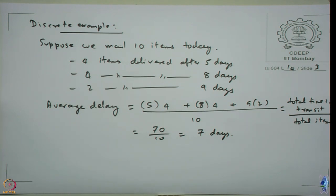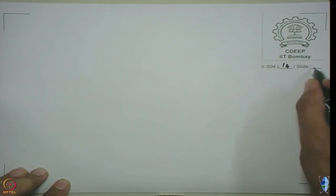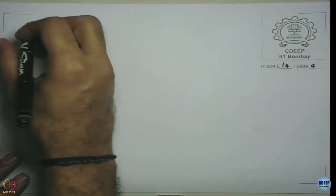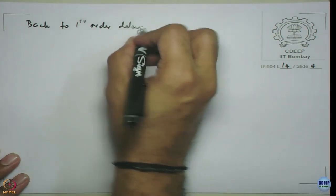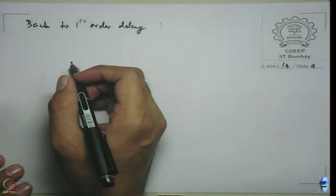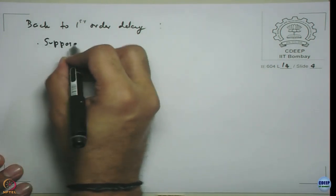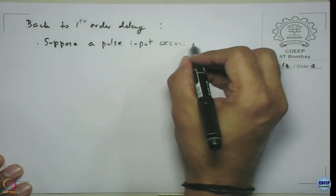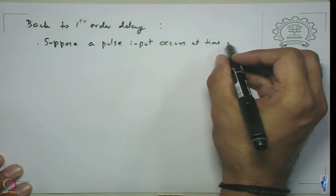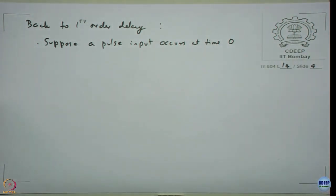Now let us see how we can do it for the continuous case that we have right now, where at every time instant we are having some unit that is getting out of the stock. Let us go back to first order delay. Let us suppose a pulse input occurs at time zero and there is no other input. Inflow occurs at time zero, that means stock has initial value of some pulse 1 unit and we want to see what is average time it takes to drain it.